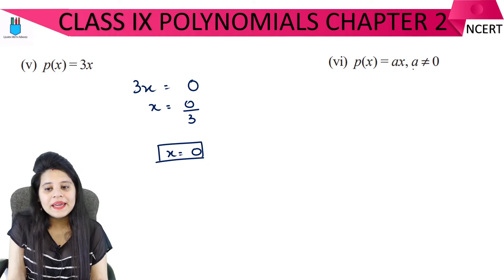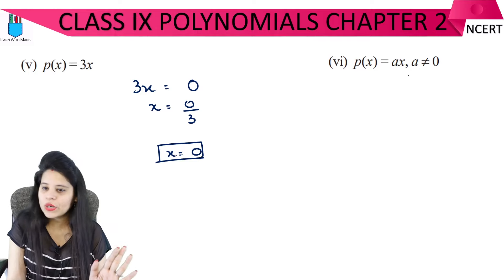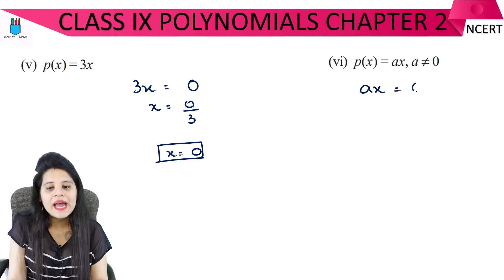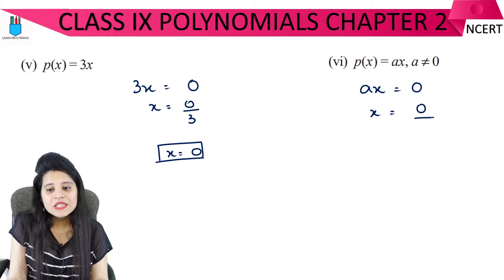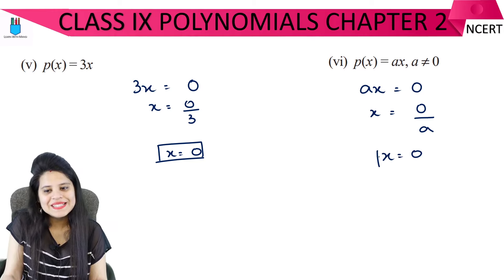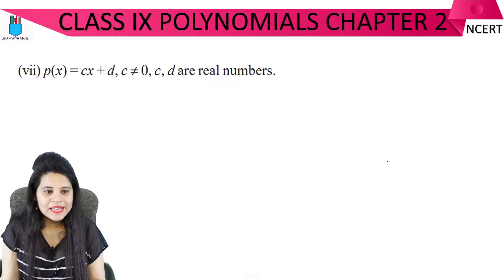The sixth part is ax, where a is not equal to 0. If we have ax equal to 0, then x equals 0 upon a, so x is equal to 0. That is the sixth part.